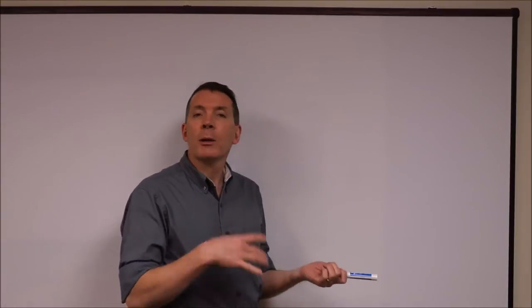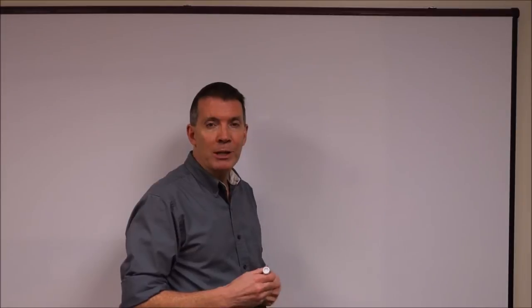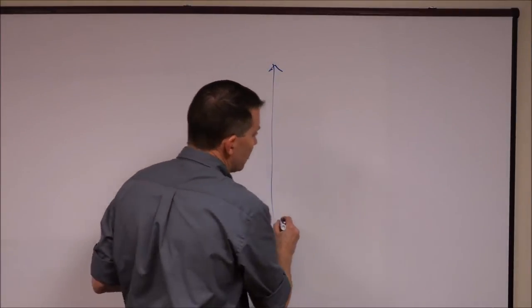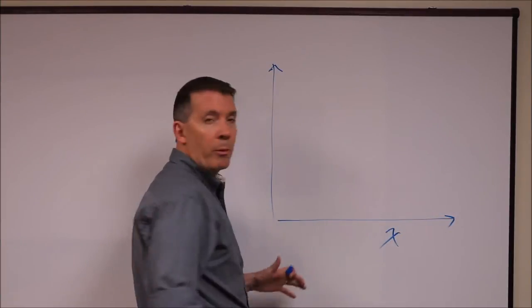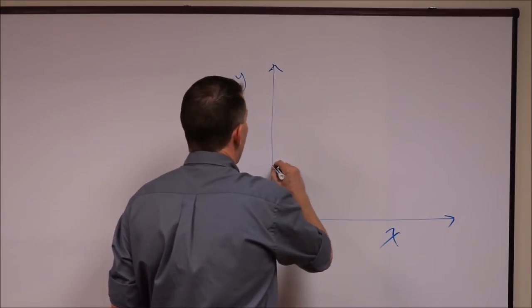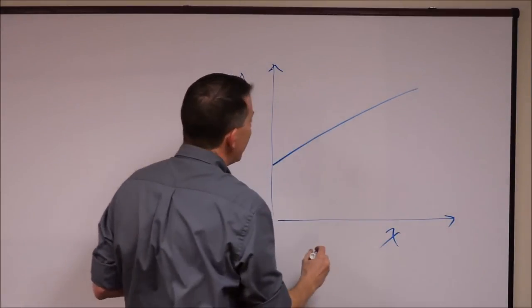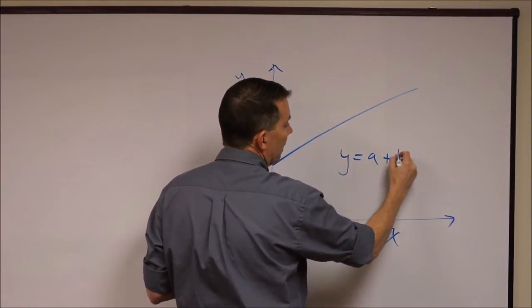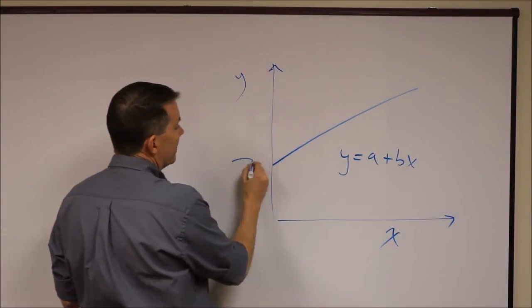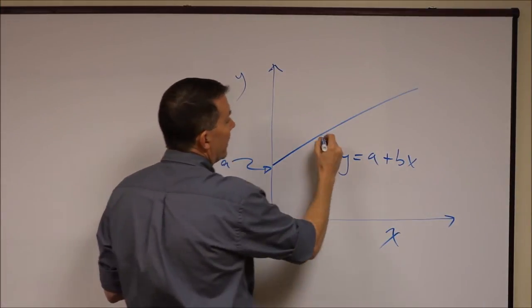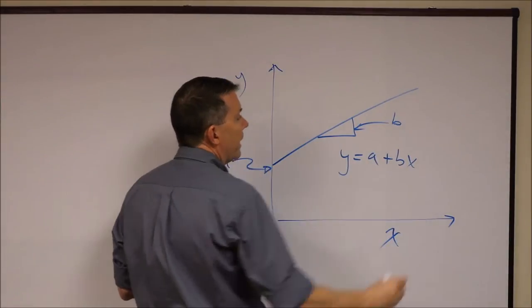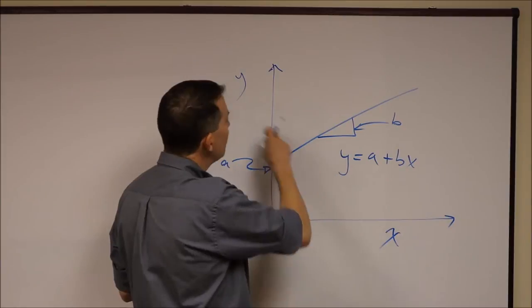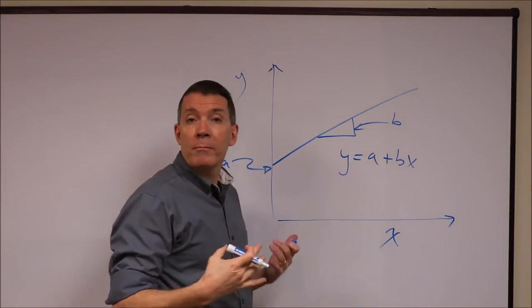Very briefly, I want to teleport back to maybe sixth or seventh grade where we learned how to plot a line in a Cartesian space. If you go back to way back when, you remember we had an x and y axis, we could plot some line and we could write an equation for it where y equals a plus bx, and a was the intercept and b was the slope, and that was rise over run, and a one unit increase in x was associated with a b unit change in y.